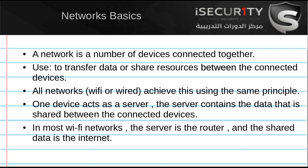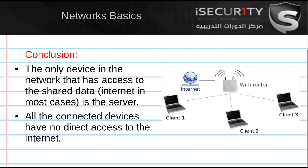So on most Wi-Fi networks, the server is the router, and all devices connect to this router and access the internet through the router. All the devices on the network have no direct access to the internet, as we can see in this diagram. The only device connected to the internet is the Wi-Fi router. All the other devices — client 1, 2, and 3 — have no access to the internet but can access it by connecting to the router.